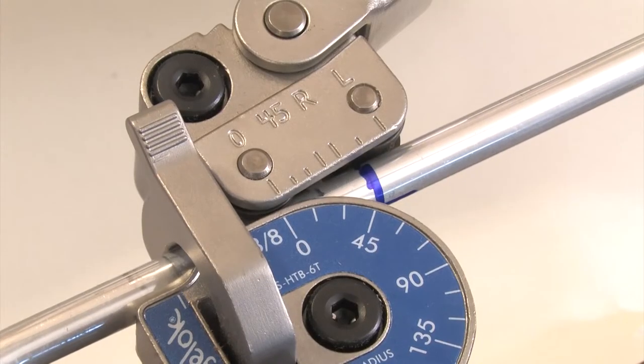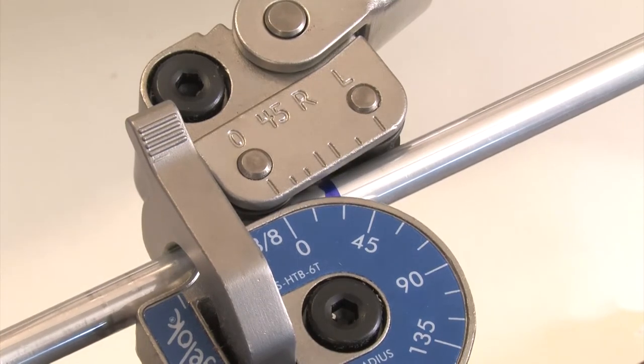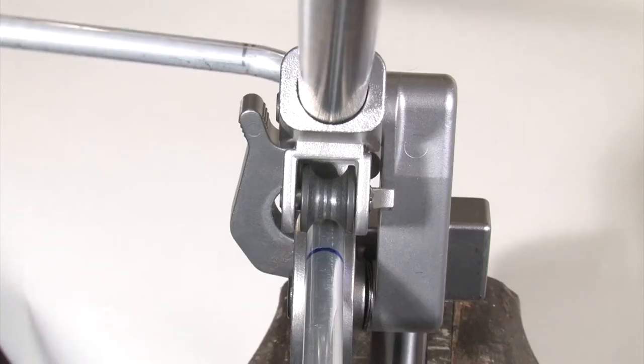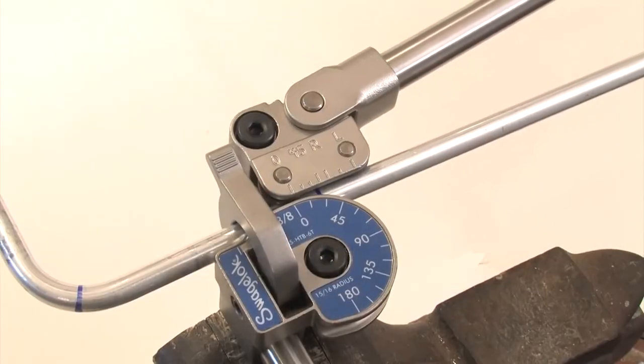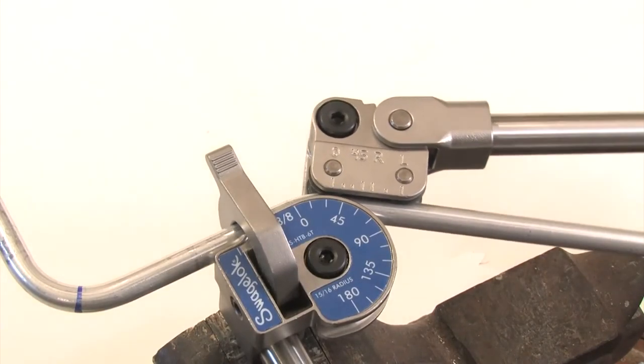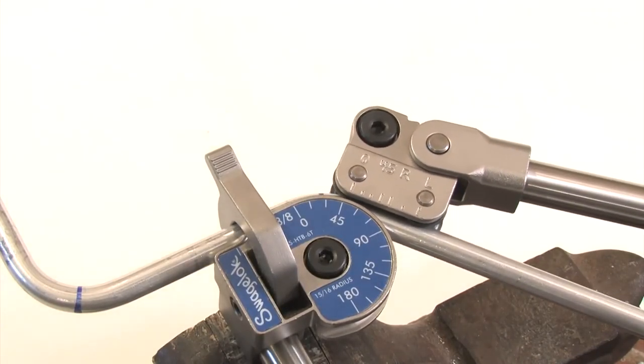Line up the bend mark with the 45 degree mark on the top scale. Rotate the tube until the directional mark lines up with the short handle. Make the second bend to 45 degrees and correct for spring back if necessary.